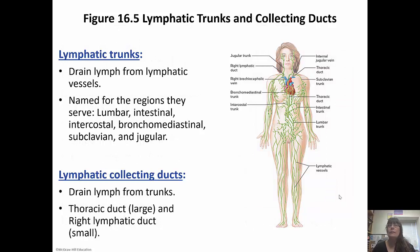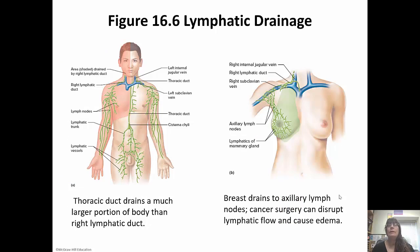The lymphatic trunks drain the lymph from the vessels and are named for the region they serve — lumbar, subclavian, etc. The lymphatic collecting ducts drain the lymph from the trunks. The thoracic duct is the larger one, and the right lymphatic duct is the smaller one; both drain into the subclavian veins. The thoracic duct drains a much larger portion of the body than the right lymphatic duct, which is why it's larger.